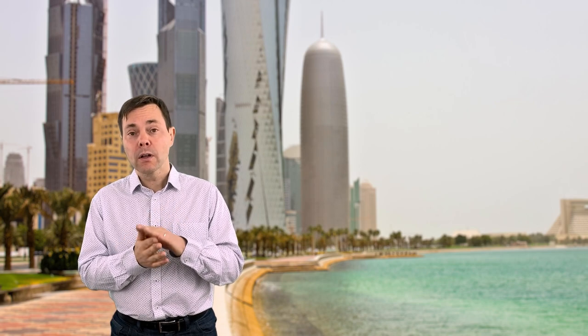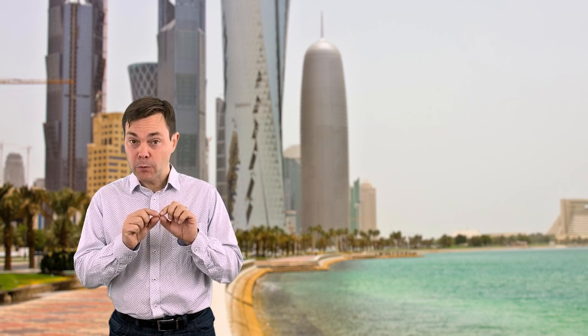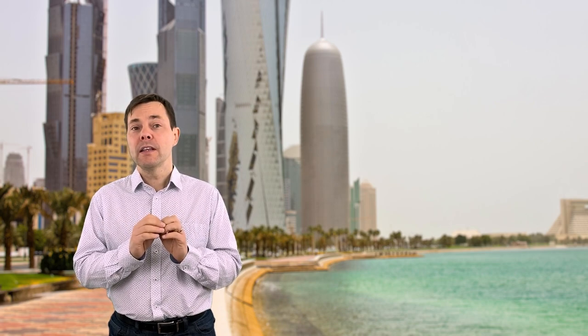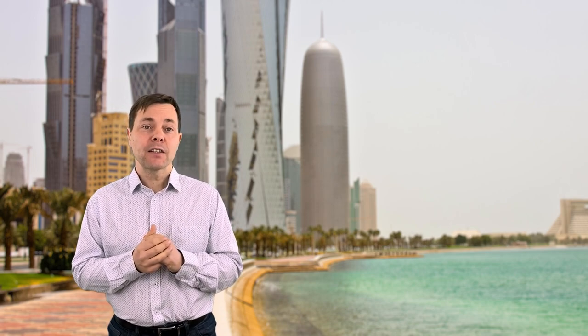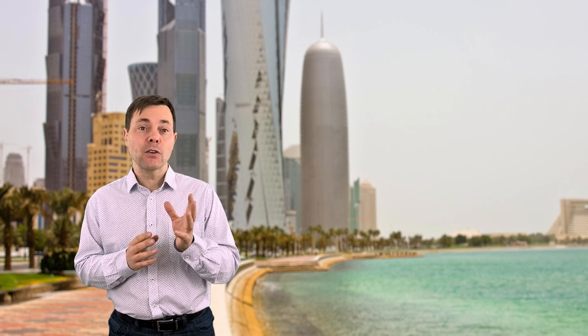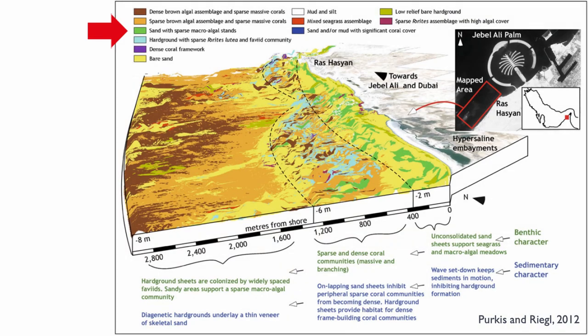Corals tend to form small carpets — a veneer on top of either sand or hard ground. It's also clear that when you have sand you can have macro algae associated with it, so in very sandy deposits you have a little bit of dense and sparse corals.